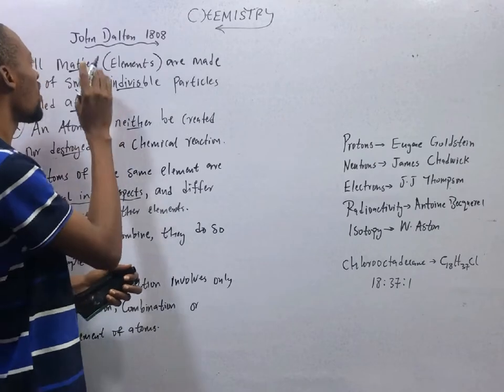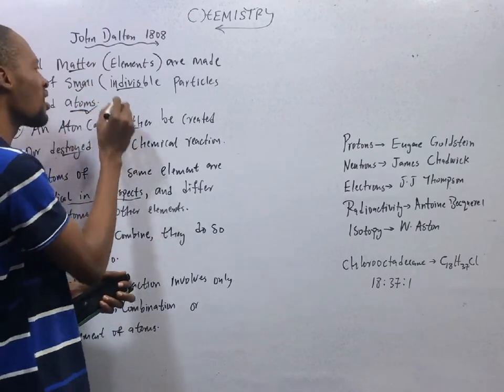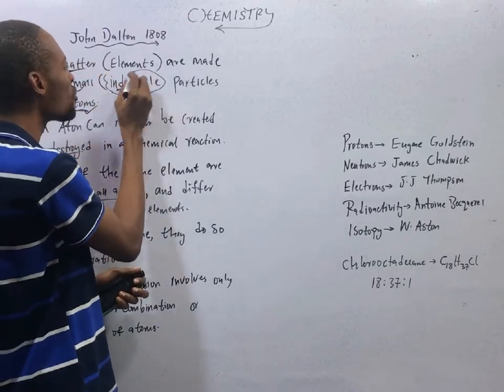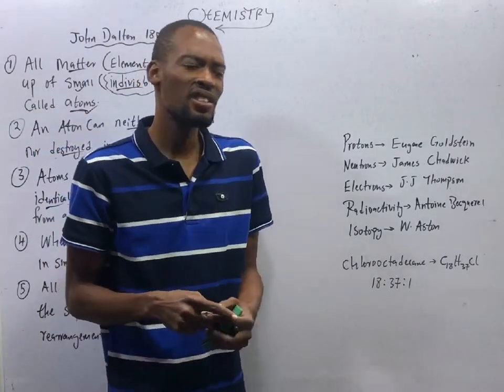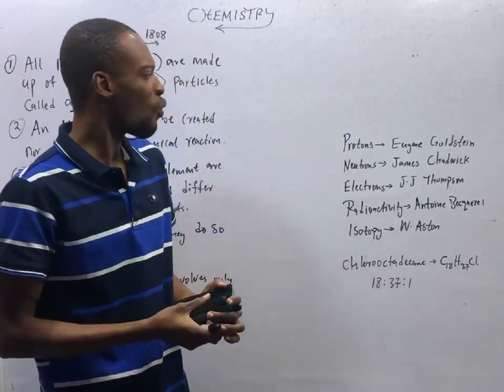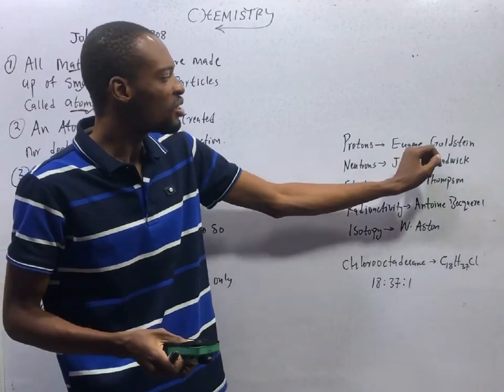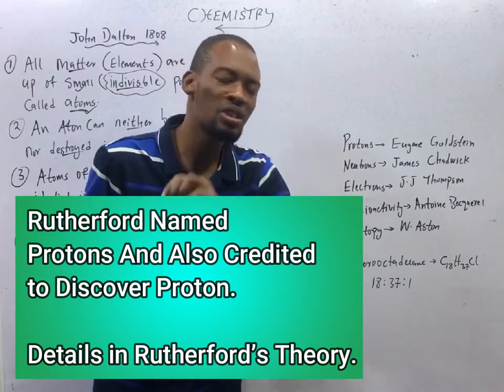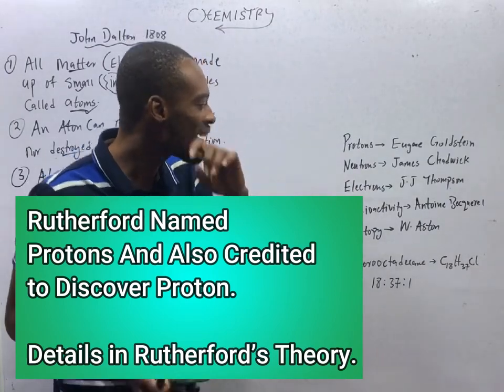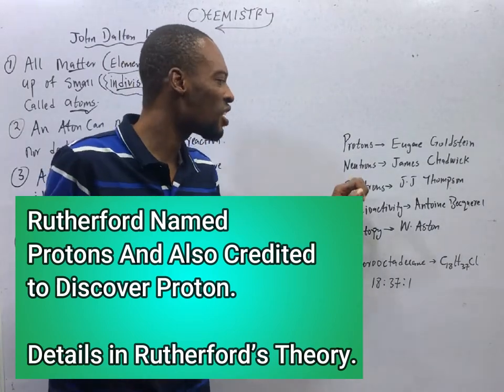But atoms are not indivisible. They are small, correct? All matter are made up of atoms, correct? But this part of atoms being indivisible is wrong. And this was when men like Eugene Goldstein discovered protons, James Chadwick discovered neutrons, and J.J. Thomson discovered electrons.